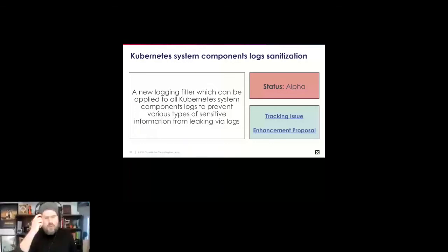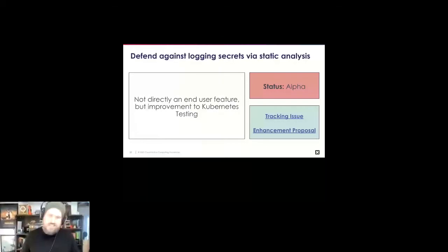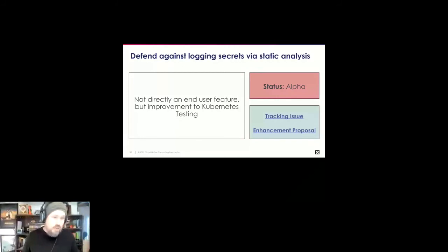Another instrumentation item is defending against logging of secrets from the infrastructure. When a PR is made to Kubernetes, Prow runs all the tests. This enhancement uses static analysis to determine whether any code is likely to leak information — if it is, the PR will fail. This adds upfront guards to ensure secure software is shipped by default.